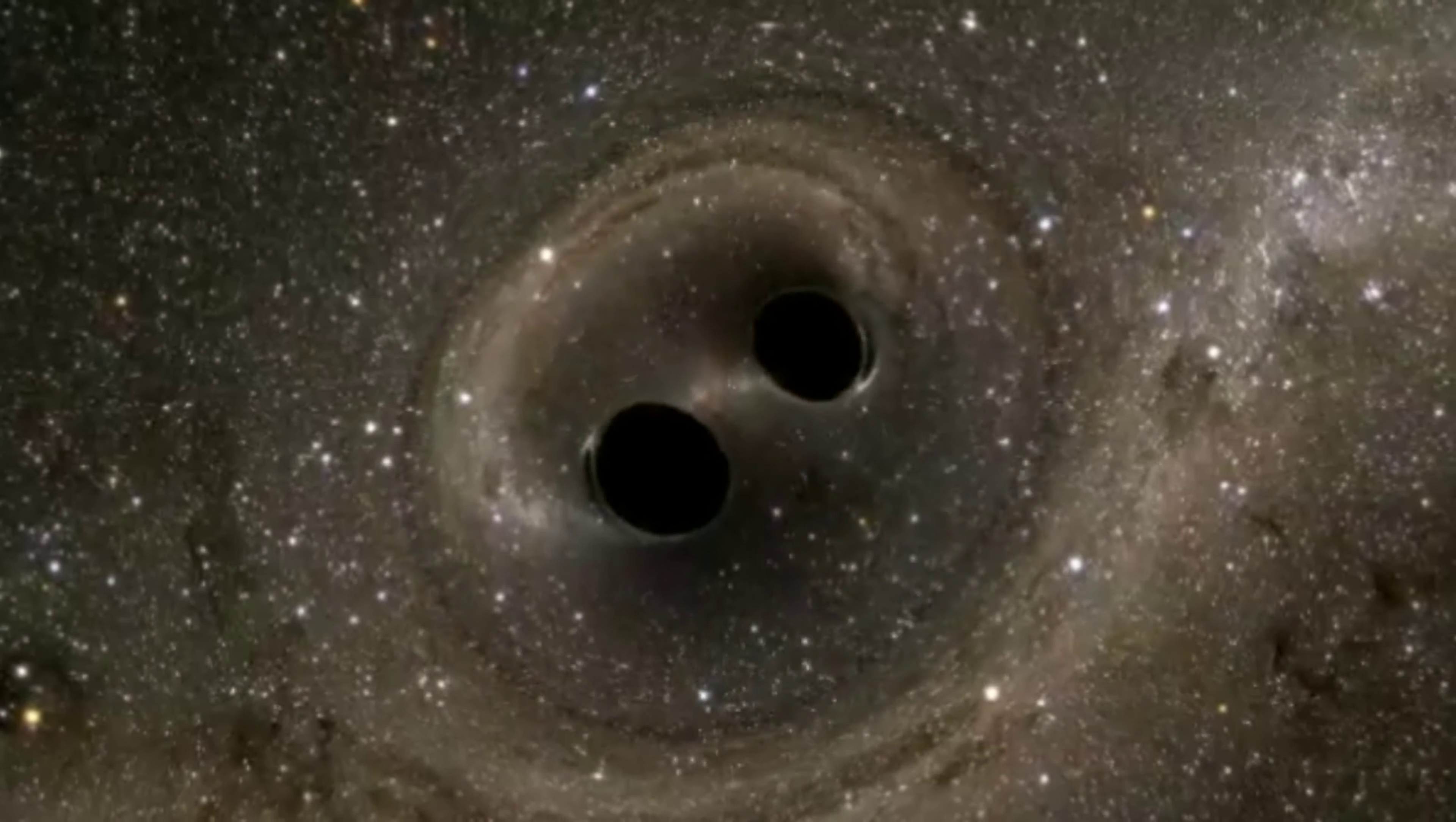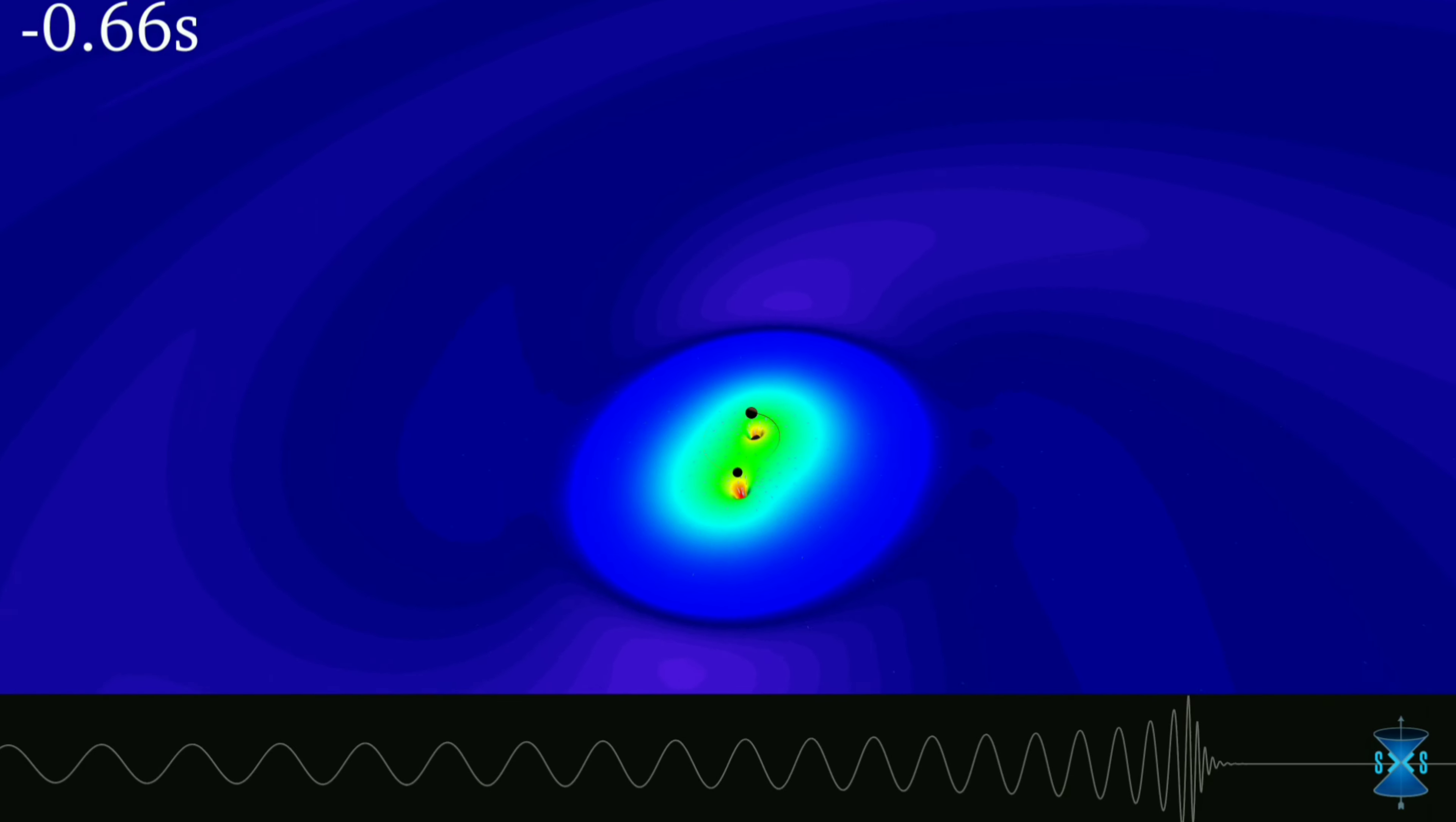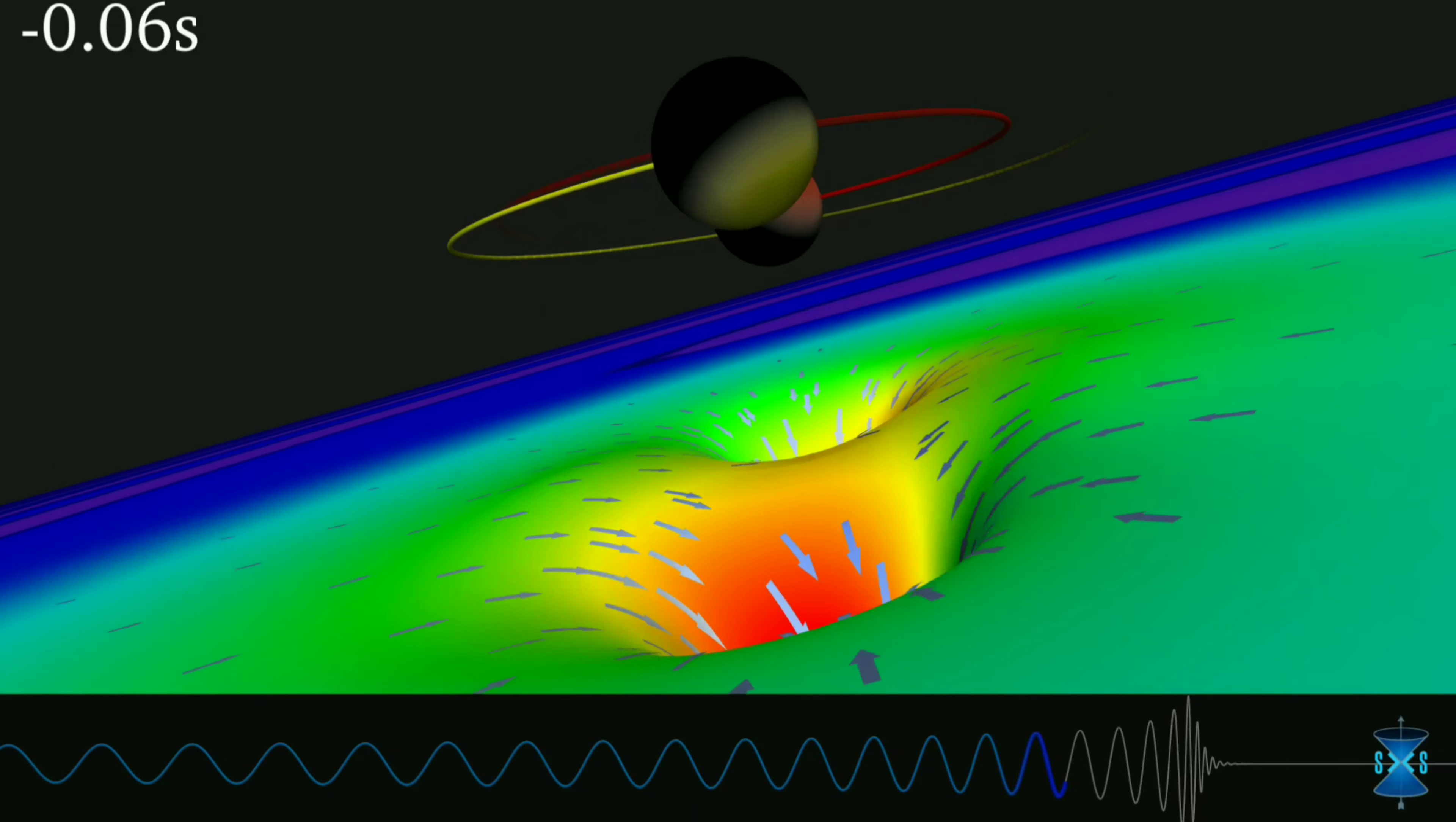On 11 February 2016, scientists announced the detection of gravitational waves generated by the merging of two black holes three billion light years away from Earth. According to the scientists, one black hole had 30 times mass of the Sun and another one had 20 times mass of the Sun. They were orbiting each other for billions of years.